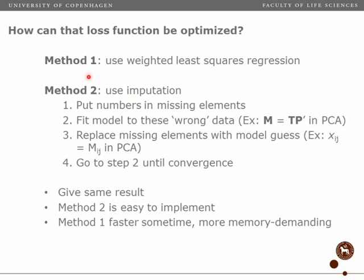These two methods will give the same results in the end. This method is easy to implement because you just need a least squares algorithm. The weighted least squares is sometimes more efficient in terms of iterations, but it also requires more memory. That's why we chose to implement method two in most of our algorithms.